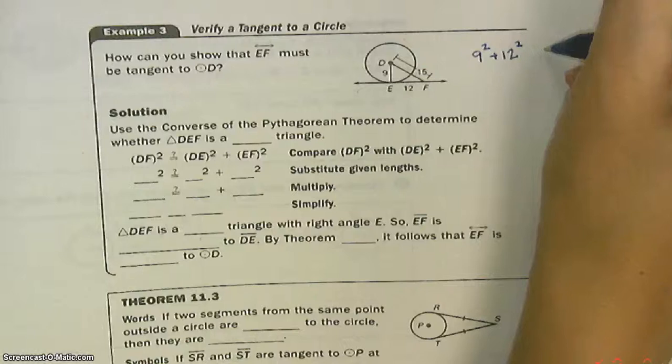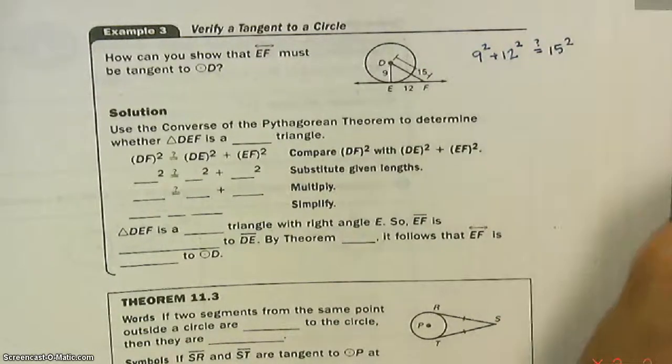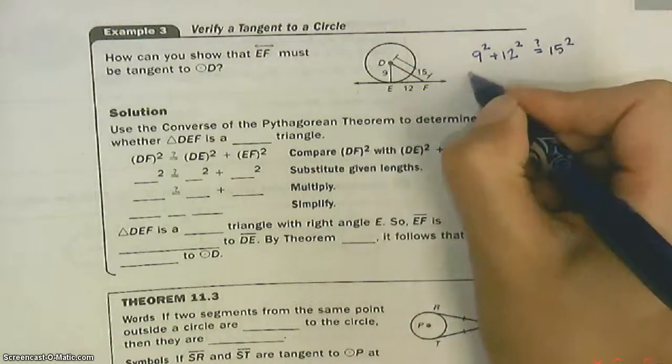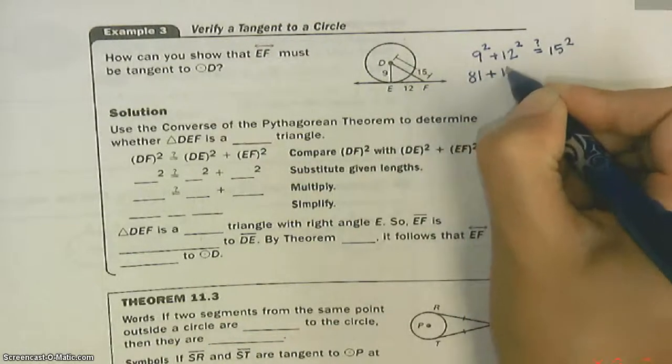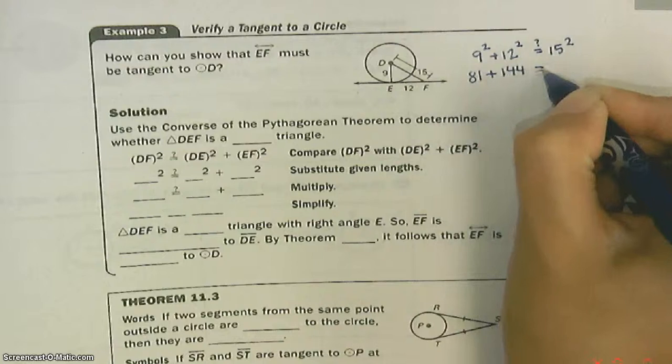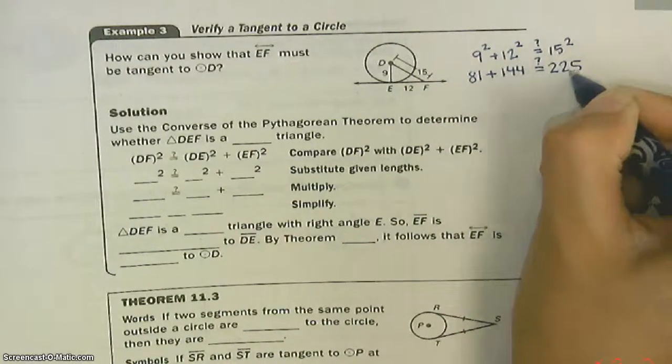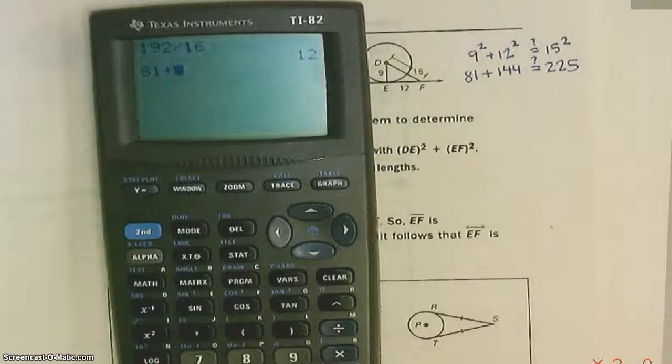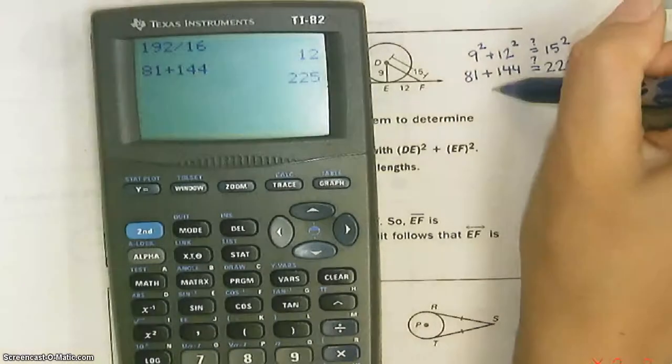Because that makes it a right angle, and then it would be tangent. 81 plus 144, is that equal to 225? Let's see. 81 plus 144 is 225.